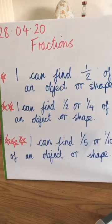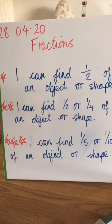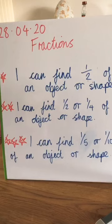To be successful today, our one star challenge is: I can find half of an object or shape. Our two stars challenge: I can find half or a quarter of an object or shape. And our three star challenge is to find a fifth or a tenth of an object or a shape.